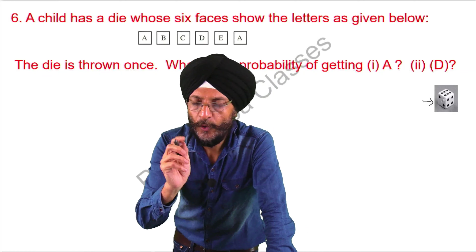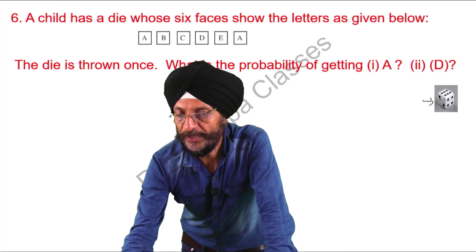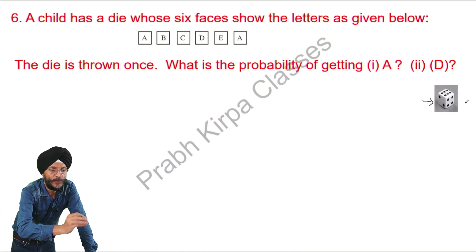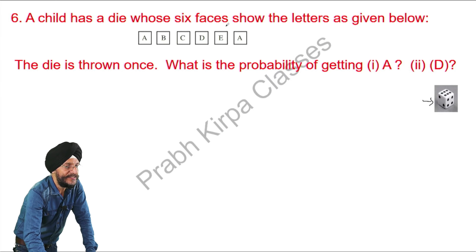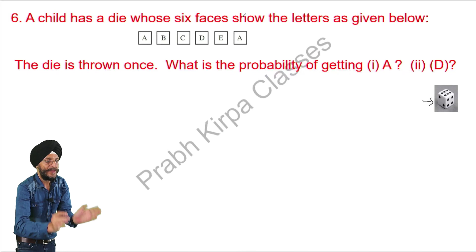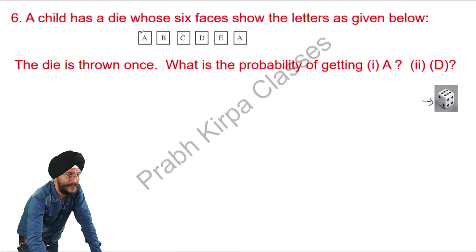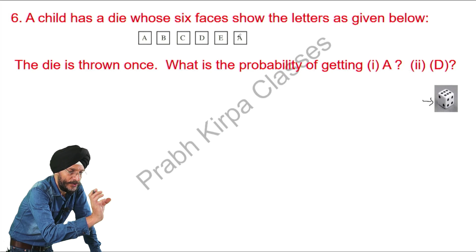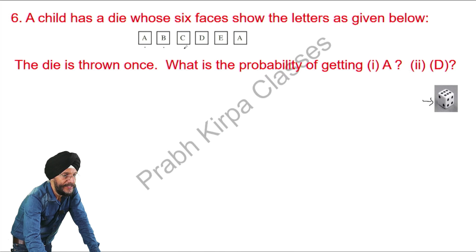Normally, the die or dice has dots on it, that is 1 to 6. But here, the die has different things appearing on it — letters are appearing on it. Please go through the question carefully. You will observe that the letters written are A, B, C, D, E, and A.